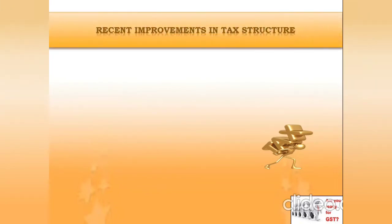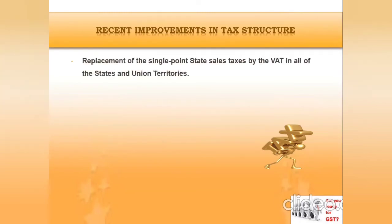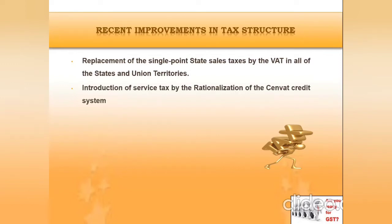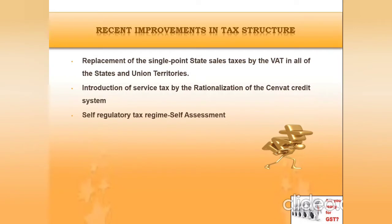Now let us have a quick view on recent improvements in tax structure. First, replacement of the single-point state sales tax by the VAT in all states and union territories. Next, introduction of service tax by the rationalization of the Central Credit System — that is the Central Value Added Tax Credit System. Next, a self-regulatory tax regime, that is self-assessment. Next, dispute resolution measures.